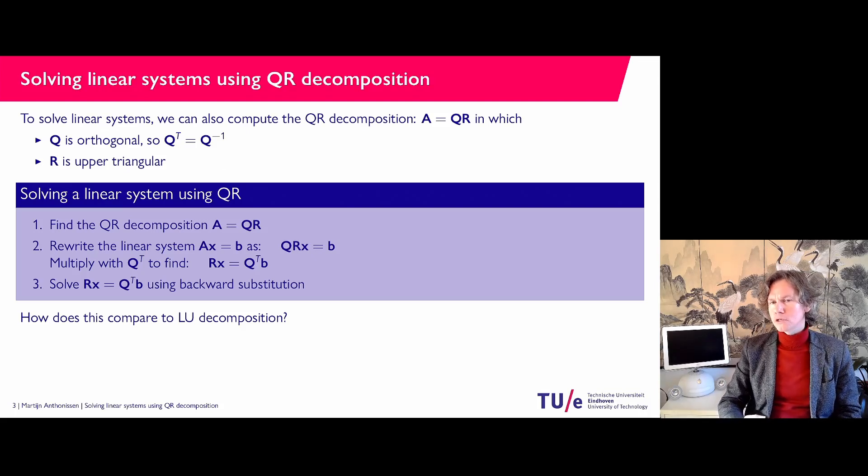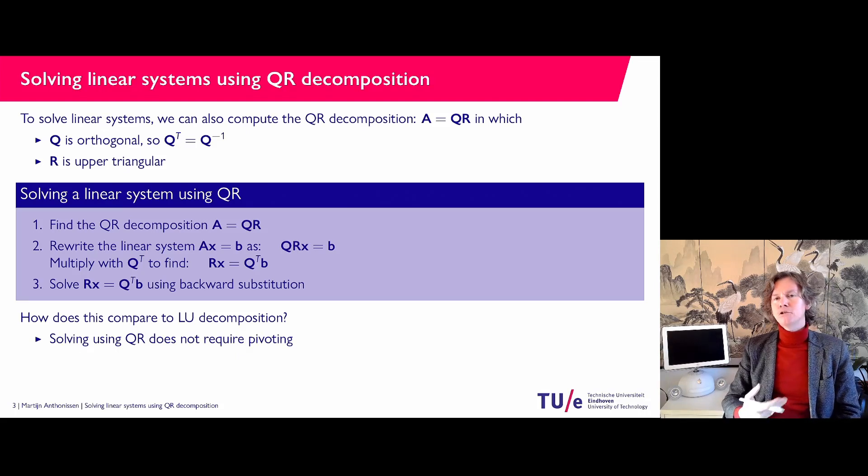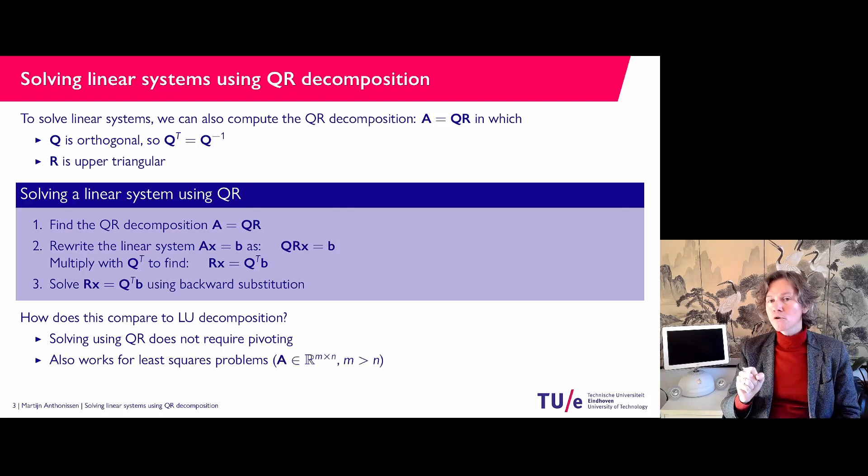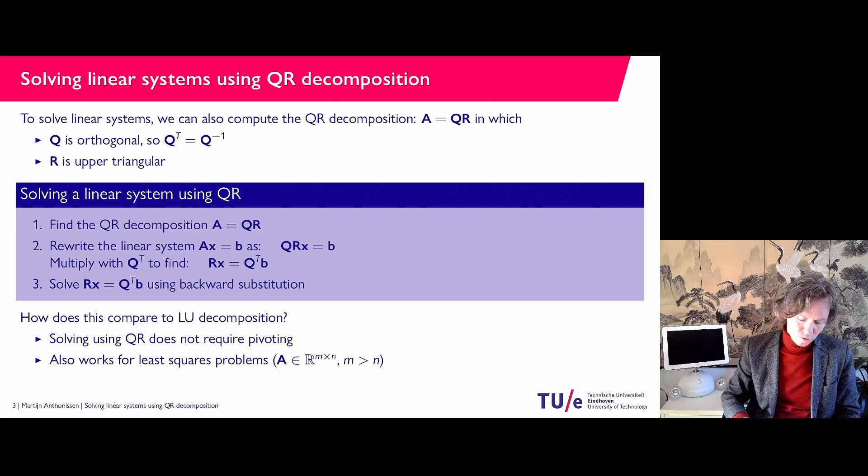So how does this compare? Why would you do this rather than LU decomposition? Well it does not require pivoting, so it can be an advantage if you don't want to think about that. As I said, it also works for over-determined systems, for least squares problems where you have more equations than unknowns, which means you cannot solve all of them and you have to do some approximation.